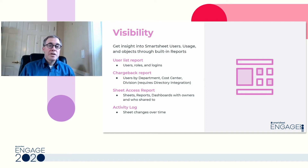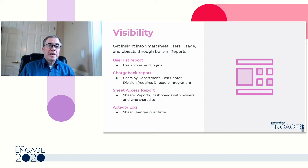Note this requires the directory integration feature to be enabled. This enables you, if you have Azure Active Directory, to provision and deprovision users in Smartsheet. It also provides alignment with your corporate directory structure that provides the data for this report. The third report is the sheet access report — a comprehensive listing of sheets, reports, dashboards, and forms, and more importantly, with their owners and who they are shared to.